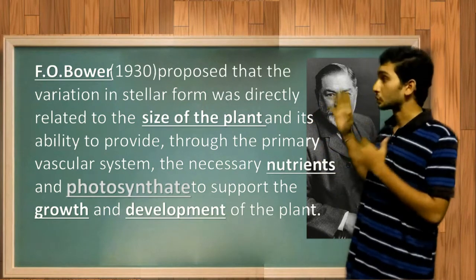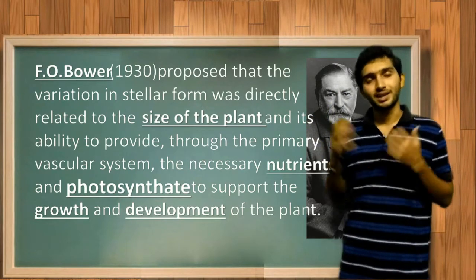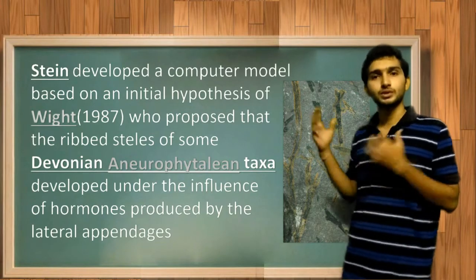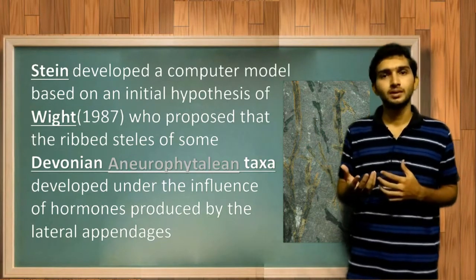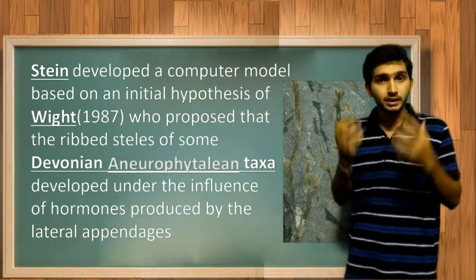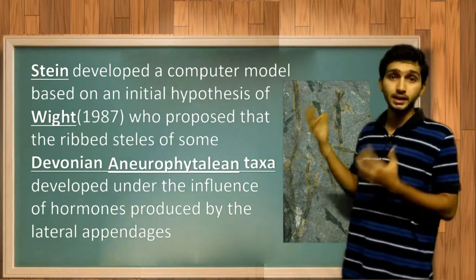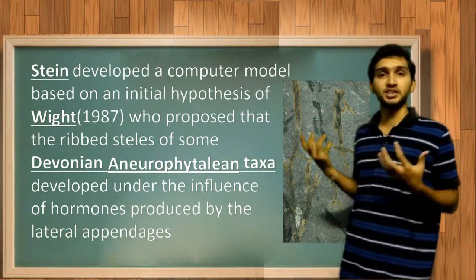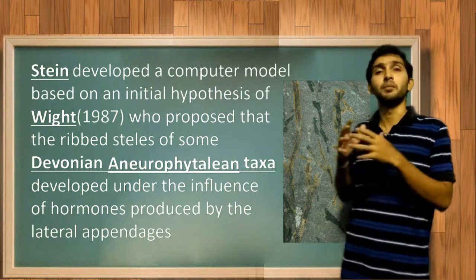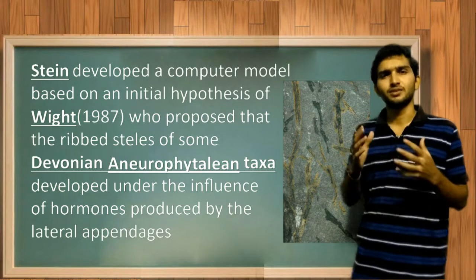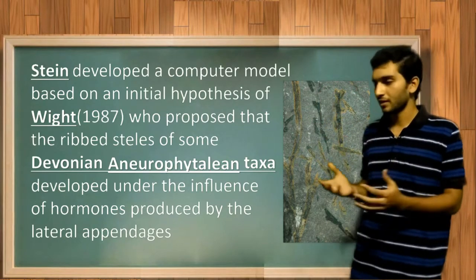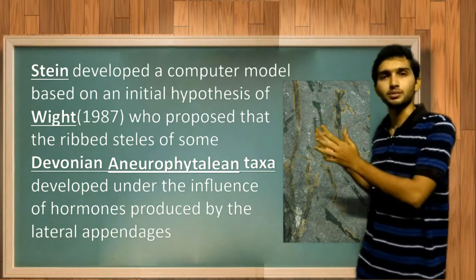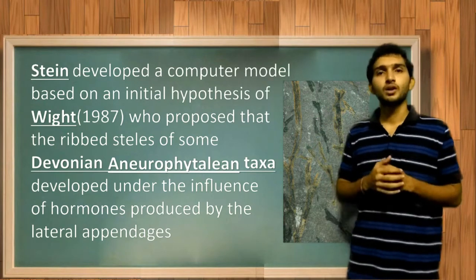Later, on the basis of a hypothesis proposed by White, who proposed the steles of some Devonian trimerophytean taxa which are developed by the later appendages — on the basis of this theory, fossil records were collected and sections were made, and all types of variation were collected. Now, on the basis of ontogeny and phylogeny, steels are classified.